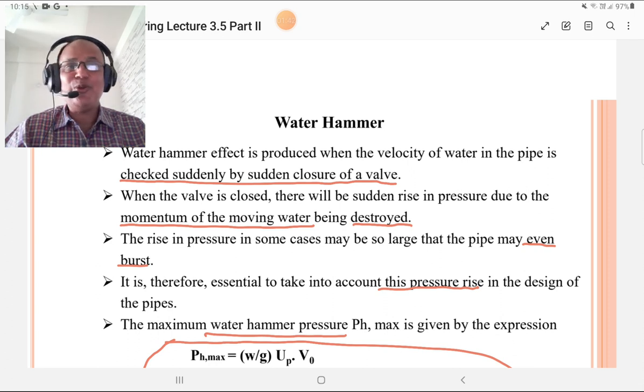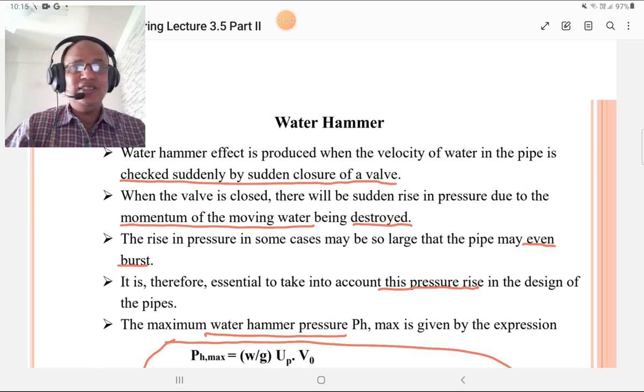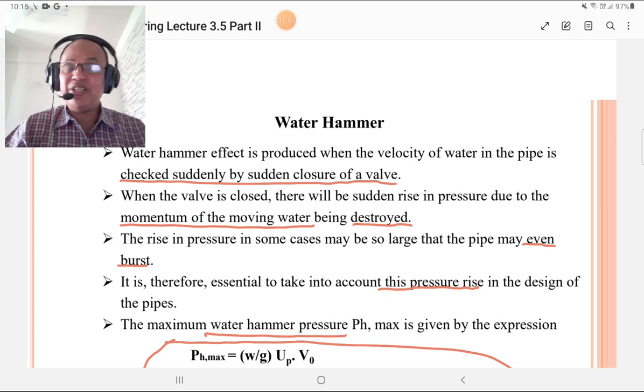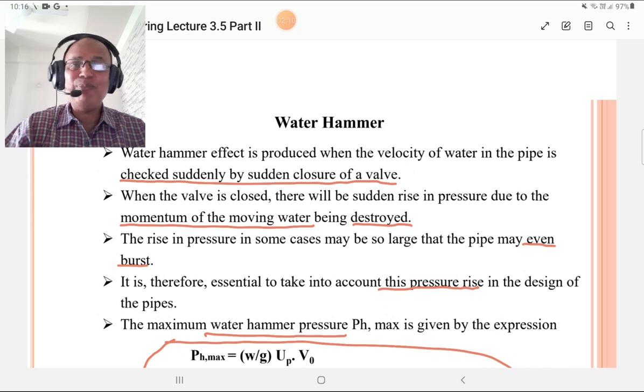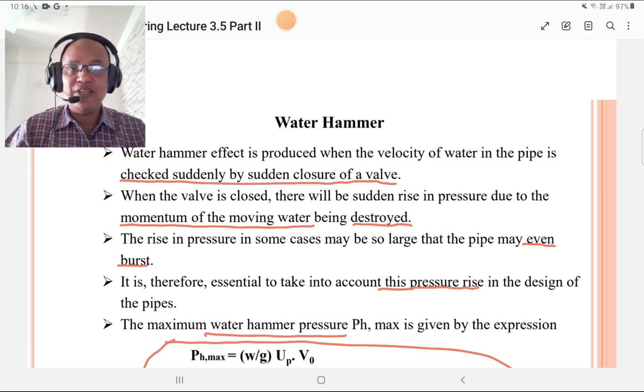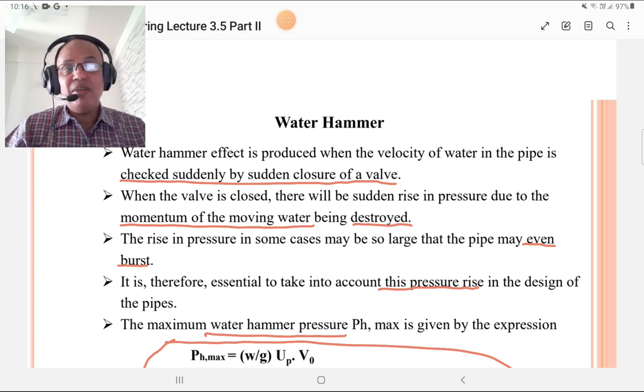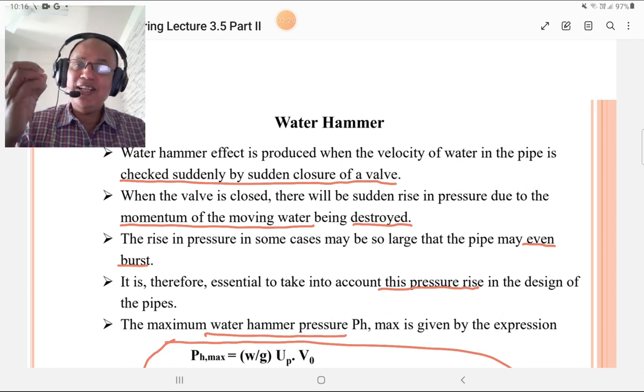Water hammer effect is produced when the velocity of water in the pipe is checked suddenly by sudden closure of a valve. When the valve is closed, there will be sudden rise in pressure due to momentum of the moving water being destroyed. The rise in pressure in some cases may be so large that the pipe may even burst. In some cases the pipe may burst.